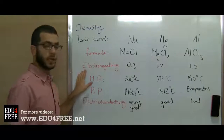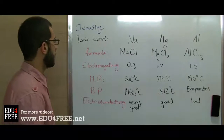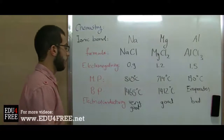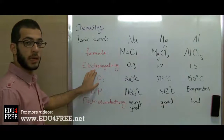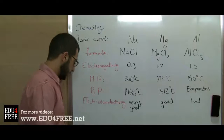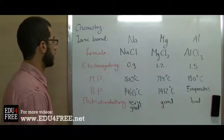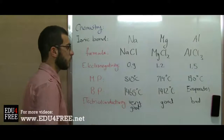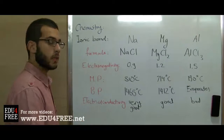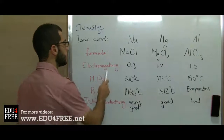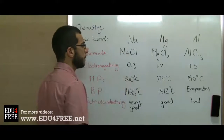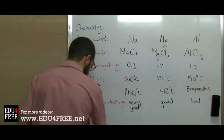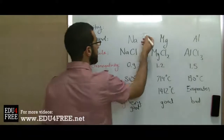Now we will talk about electronegativity. Electronegativity is the tendency of an atom to attract electrons inside a compound — so it's related to the atom in a combined state, not a single state. Electronegativity is expressed in numbers; as the number increases, the electronegativity of the element increases. The electronegativity of sodium is 0.9, magnesium is 1.2, aluminum is 1.5, and chlorine is 3.0.